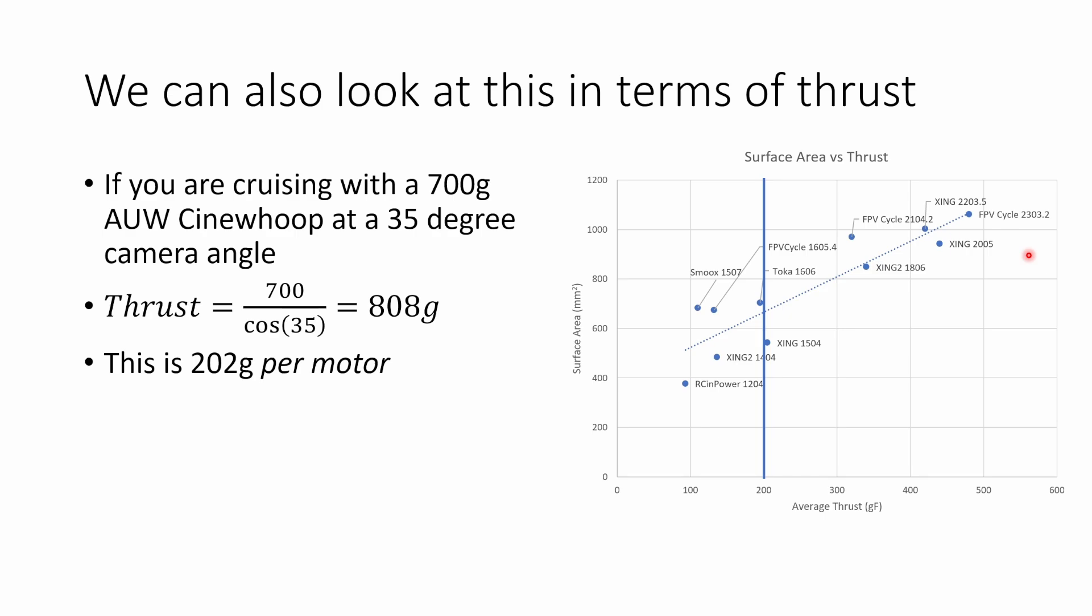Well, we can also look at this in terms of thrust. So if you're cruising with a 700 gram all-up weight Cinewhoop at a camera angle of 35 degrees, you can work out the amount of thrust that you're going to need by taking the weight of the Cinewhoop and dividing by the cosine of your camera angle. In this case, we need 808 grams to cruise 35 degrees and maintain altitude. This is 202 grams per motor, and we can work it out by looking at this graph which motors are going to be suitable.